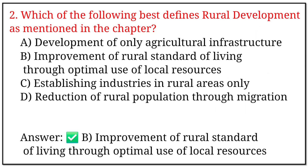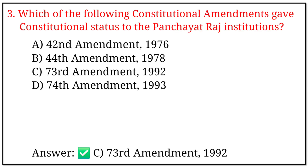2. Which of the following best defines rural development as mentioned in the chapter? Options a, b, c, and d. The correct option is b: improvement of rural standard of living through optimal use of local resources.